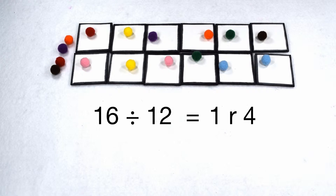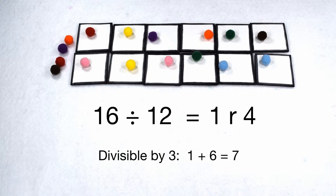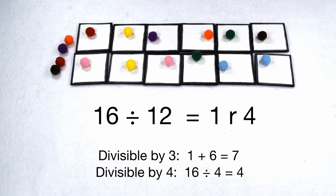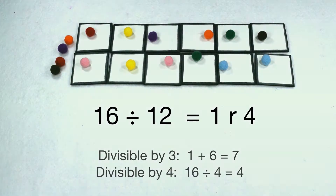If we test that with our rules, we can check to see if 16 is divisible by 3 and divisible by 4. For being divisible by 3, I would need to add together the 1 and the 6. 1 plus 6 is 7. 7 is not divisible by 3. On the other hand, checking the last two digits of just 1 and 6, 16 is divisible by 4. But since it's not divisible by both 3 and 4, then 16 is not divisible by 12.